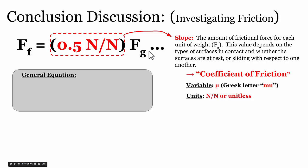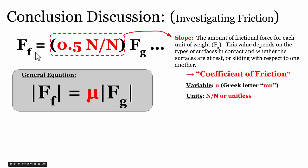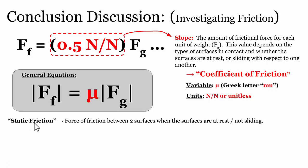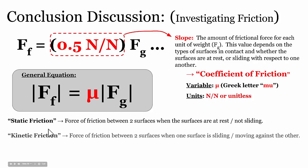We can then rewrite this as a general equation: the magnitude of the frictional force is equal to some coefficient of friction times the size of the force of gravity. That coefficient depends on the two different materials in contact and whether the surfaces are at rest or moving with respect to one another. The friction that exists between two surfaces that are not sliding we call static friction, and the frictional force between two surfaces that are moving with respect to one another we call kinetic friction.